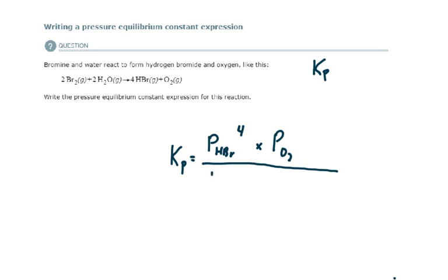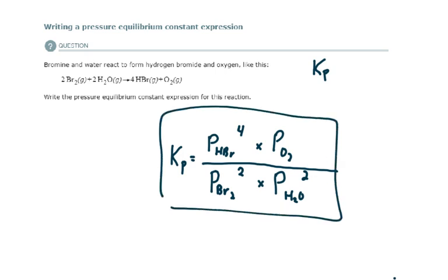Divided by partial pressure of molecular bromine squared times the partial pressure of the water vapor squared. And that is our equilibrium constant expression.